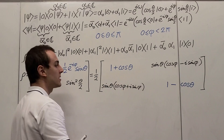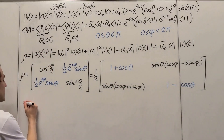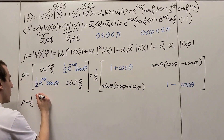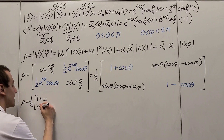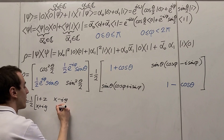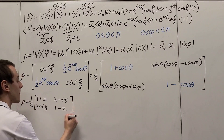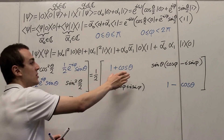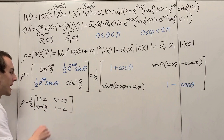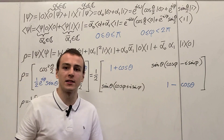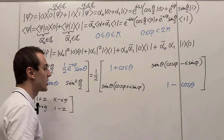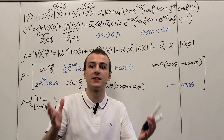Now we have many trigonometric functions, so let's simplify by writing the matrix in a more condensed form. We write it as one half times the matrix with entries one plus z, x plus iy, x minus iy, and one minus z. All I've done is relabeled the trigonometric functions as x, y, and z — and there's a reason for calling them that: these quantities are going to be the coordinates in our visualization, corresponding to a three-dimensional point on the Bloch sphere.